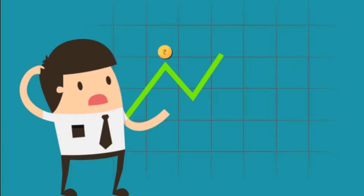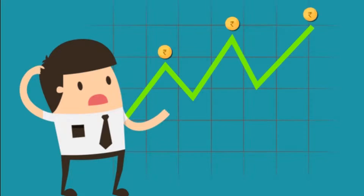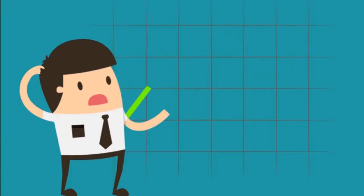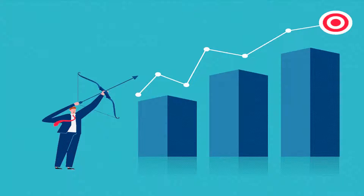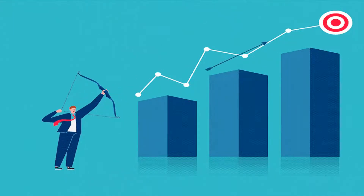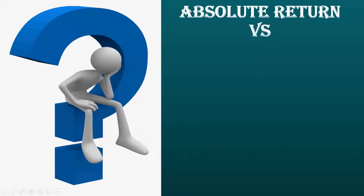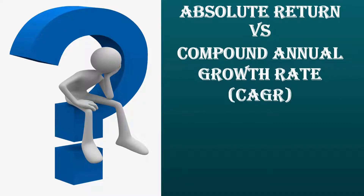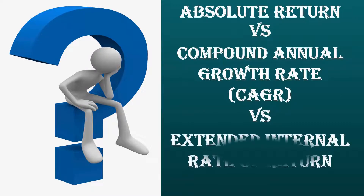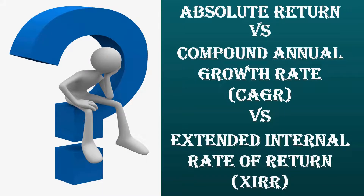Return on investments have always been the central standard for going for any form of investing. You may come across returns expressed in a variety of nomenclatures. Have you ever wondered what does each kind of return signify, or why not use a single kind of return in all types of investments? It is a knowledge of such differences that are going to take your investment to the highest levels. There are many ways to calculate returns from mutual funds; however, the most important and widely used ways are Absolute return, CAGR or Compound Annual Growth Rate, and XIRR or Extended Internal Rate of Return.